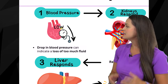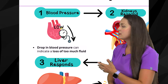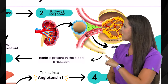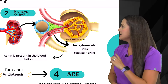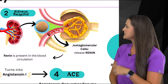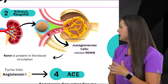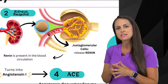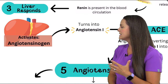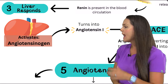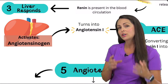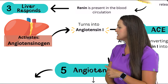When blood pressure drops, that signals to the body that there's a loss of fluid, and this causes the kidneys to respond — specifically the juxtaglomerular cells inside the kidney. They are going to release a substance called renin. Whenever renin is present in the blood circulation, it causes the liver to respond, activating a substance called angiotensinogen, which then turns into a substance called angiotensin 1.